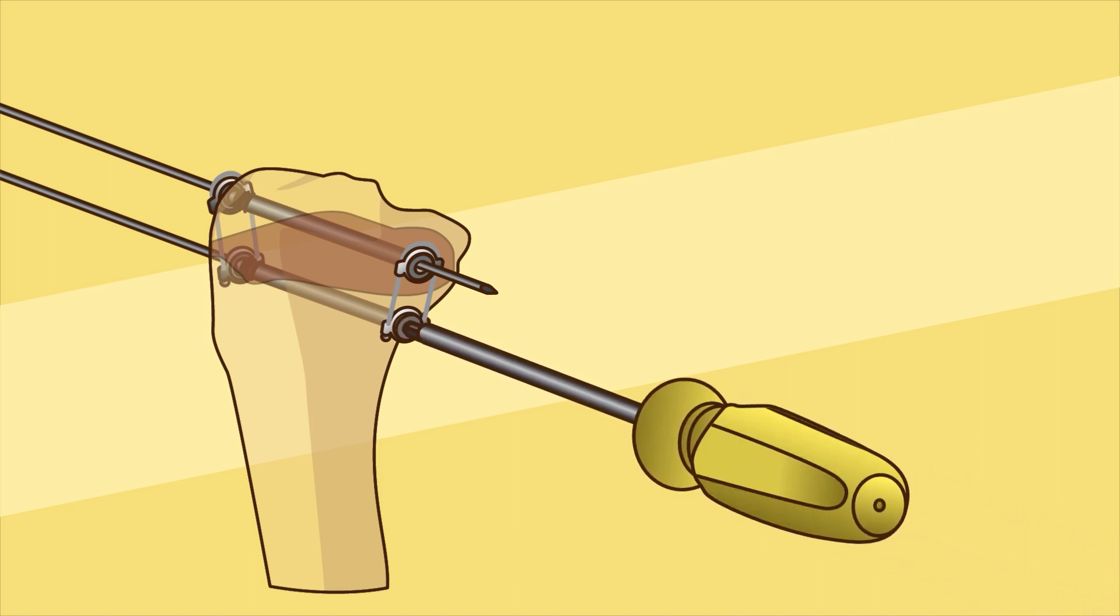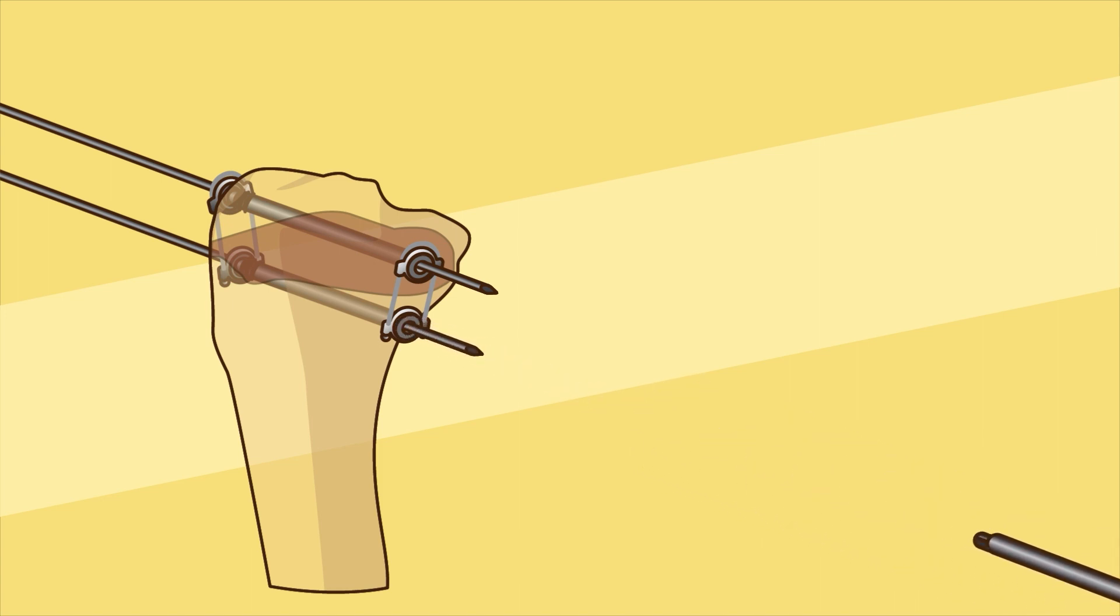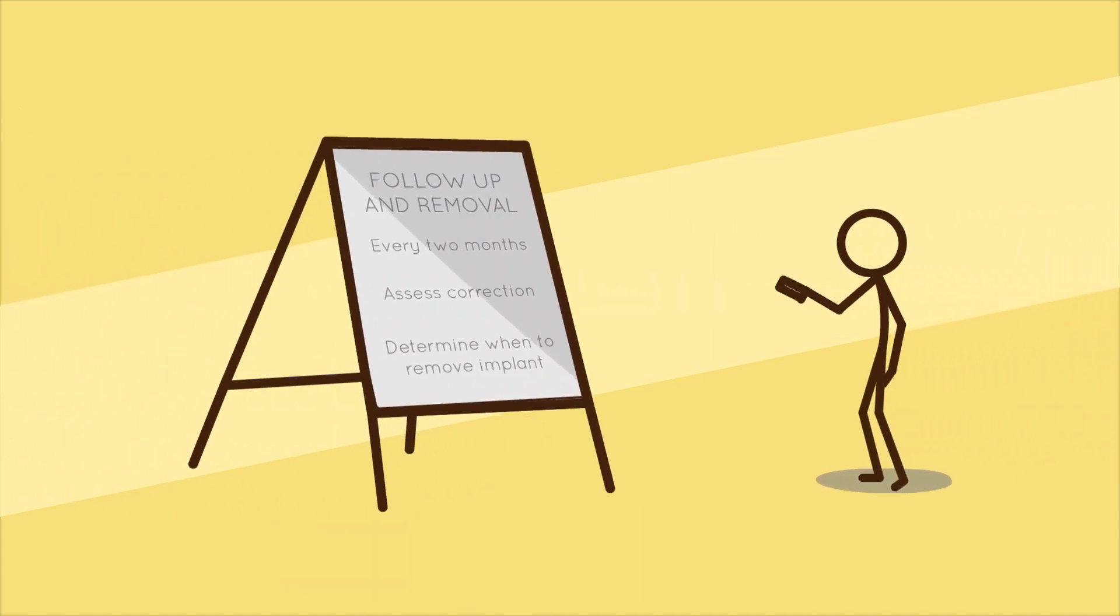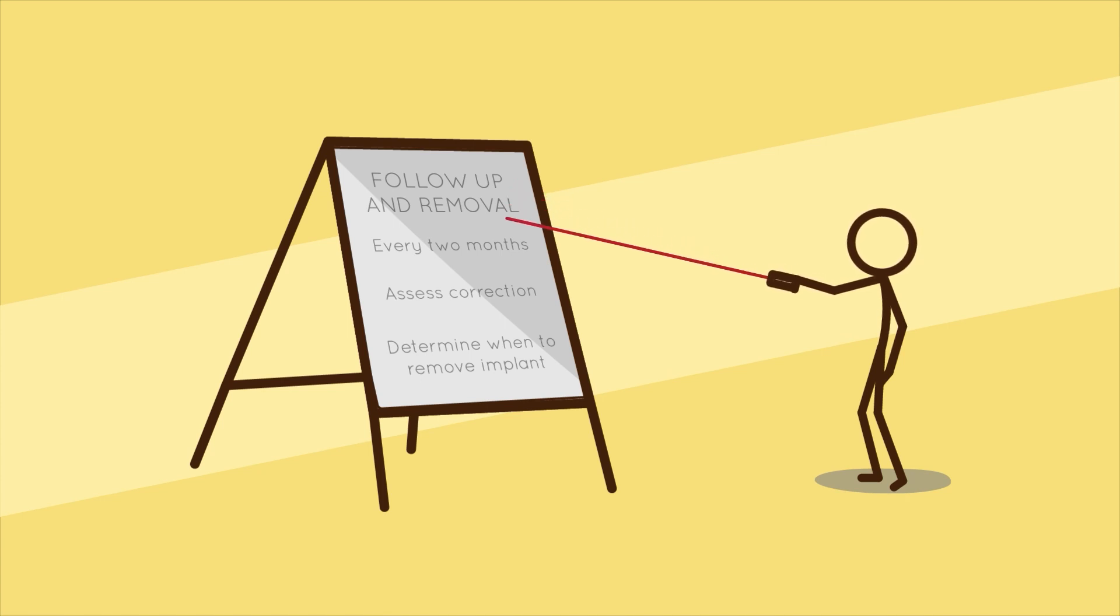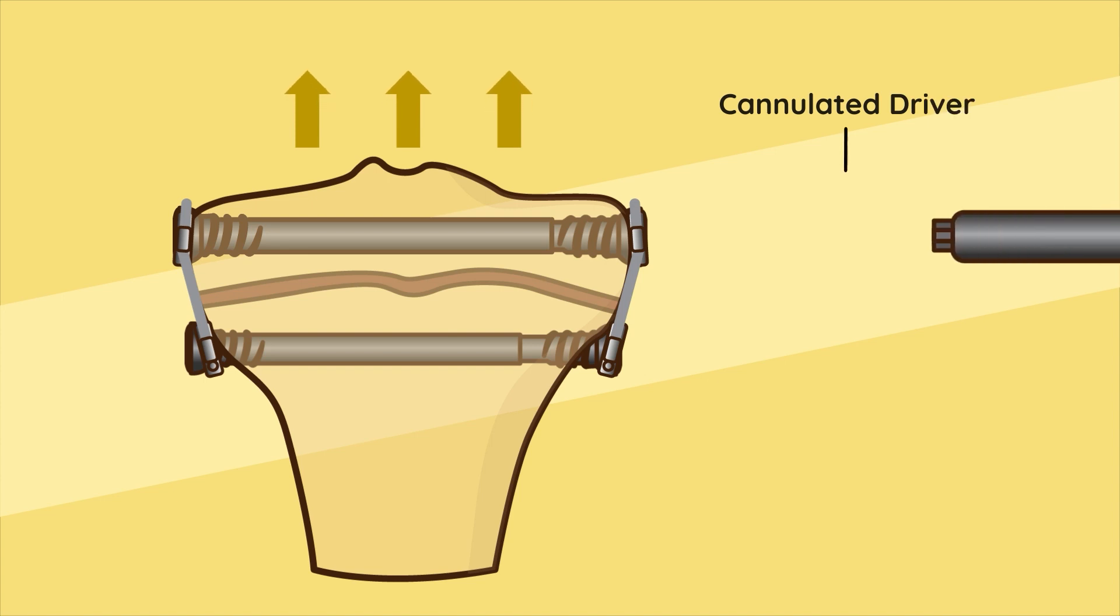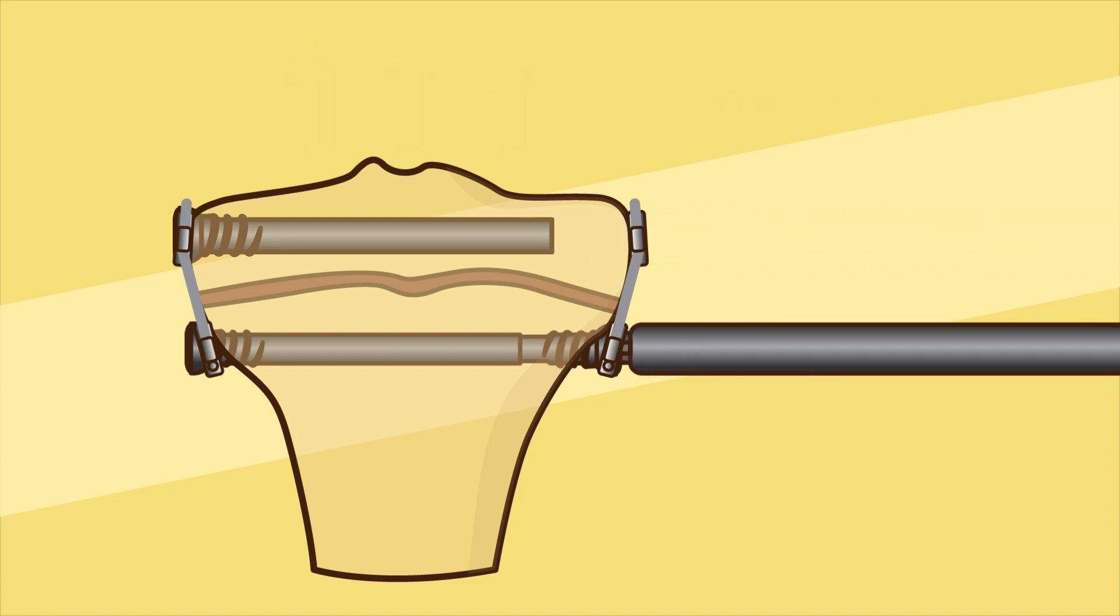Follow-up and removal: For both indications, follow-ups are recommended every two months to assess the correction of either the angle deformity or the limb length discrepancy and determine when to remove the implant. Once the desired growth modulation is achieved, the implants may be removed percutaneously.